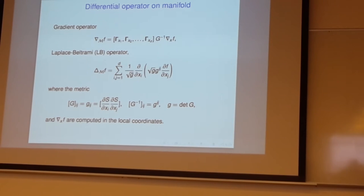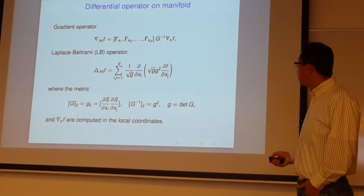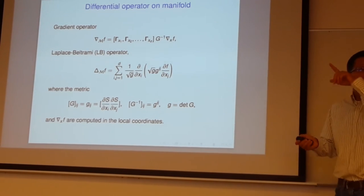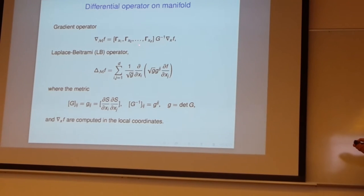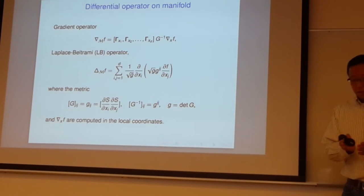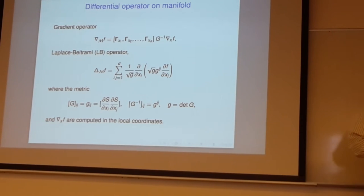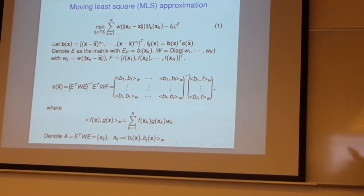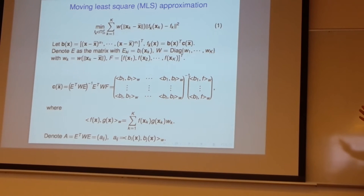Question: What are the gammas in the first equation — the gradient operator? The gammas are the tangent directions: x1, x2 is the coordinate system in the tangent space. So in the moving least squares framework, you have two moving least squares — one for the manifold, and the other for the function — in this common coordinate system.